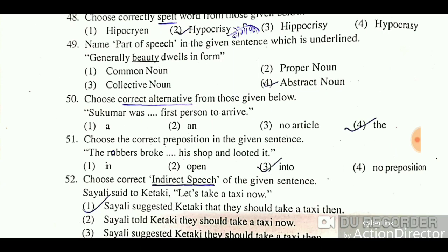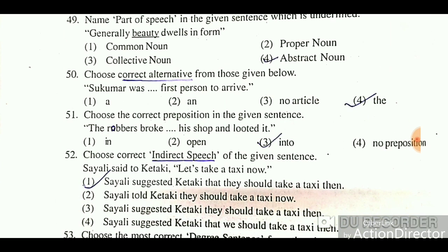Next question: Choose the correct preposition in the given sentence. 'The robbers broke dot dot dot the house and looted it.' Options: into, in, of, into. When an action of entering from outside is described, the preposition 'into' is used — for example, 'the child fell into the well'. Similarly, 'Teacher entered into the class' shows movement from outside inward, so 'into' is the correct preposition here.